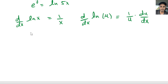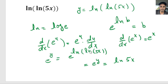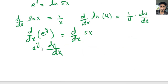So we take the derivative d over dx of e to the y on the left side, and the derivative of ln of 5x on the right side. The derivative of e to the y is e to the y times dy over dx — using the property that the derivative of e to the u equals e to the u times du over dx.